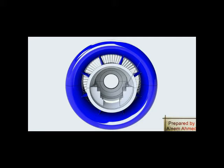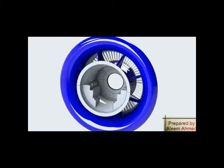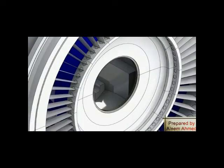The lower half of the bell mouth provides support for bearing number one. A stationary labyrinth seal is installed at the aft end of the inlet casing to prevent suction of contaminants into the compressor.